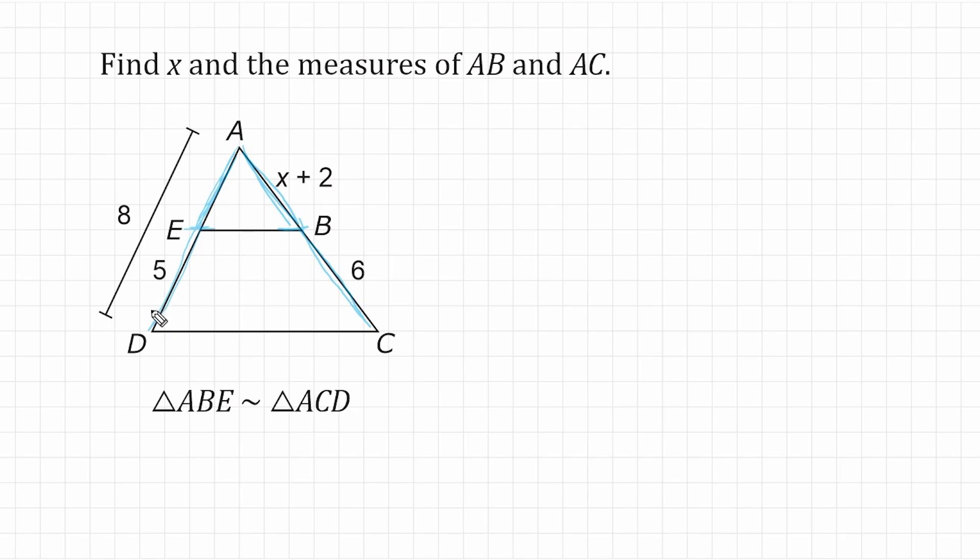So this entire line segment from A to D is equal to 8, which means A to E must be 3 units. So we can say the ratio of 3 to 5 is equal to the ratio of x plus 2 to 6.